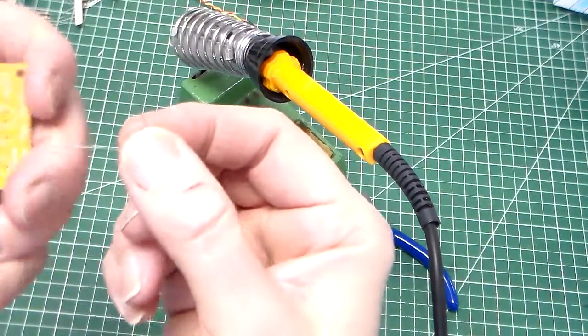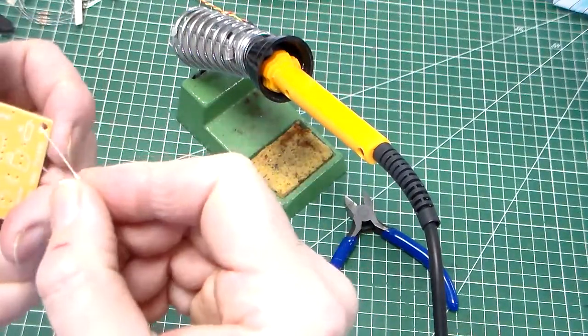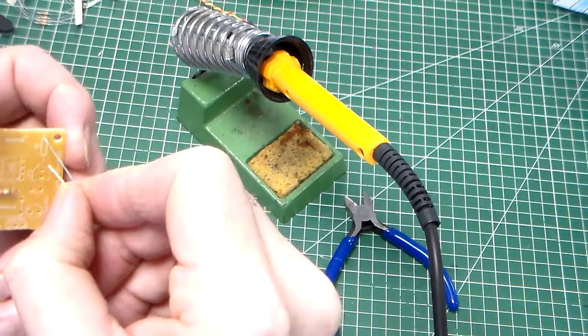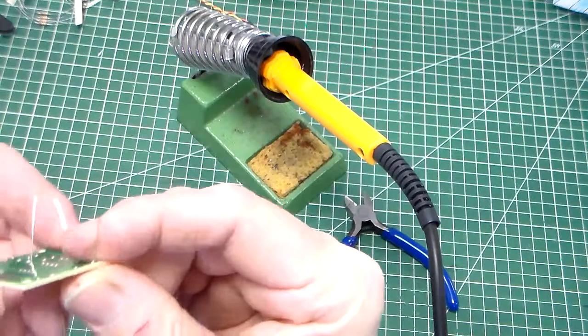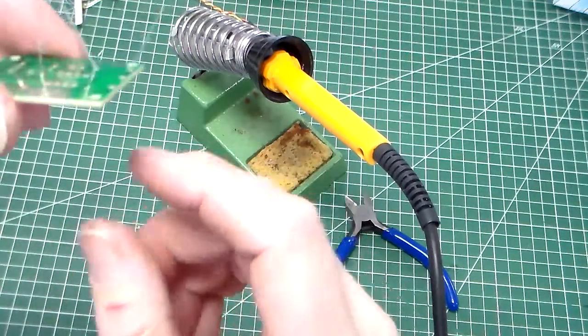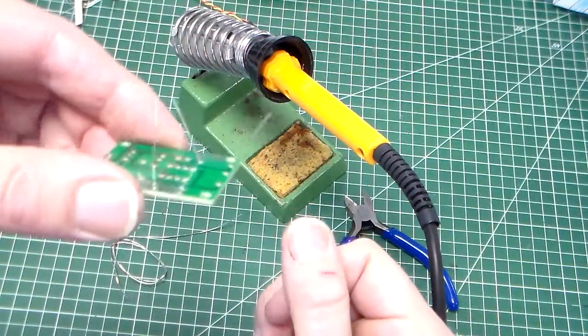We're going to bend the legs of the resistor to 90 degrees and that fits into R2. Push it down onto the circuit board. Once you've fitted both resistors, bend the legs out like that so they won't drop out.